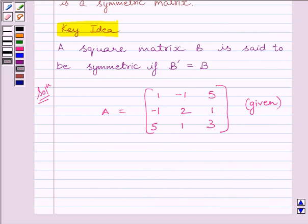Now we can obtain A transpose by interchanging the rows and columns of A. So A transpose is equal to 1, -1, 5, -1, 2, 1, 5, 1, 3.